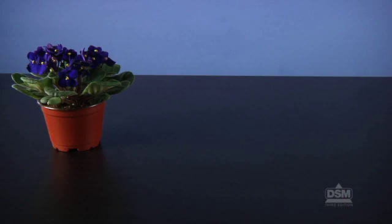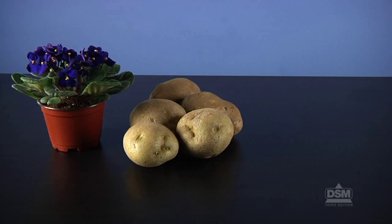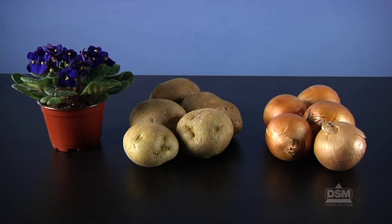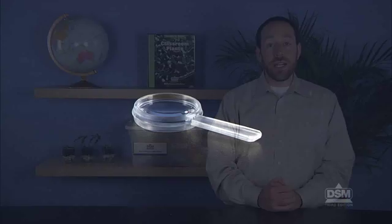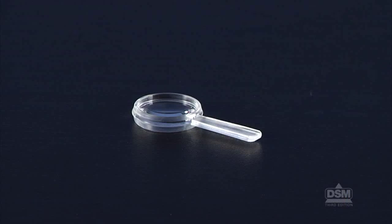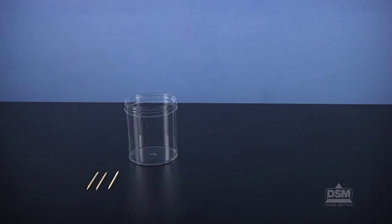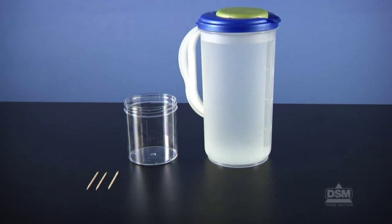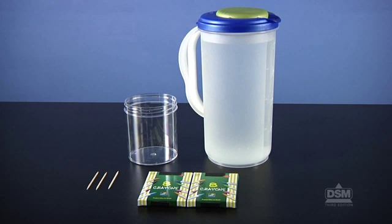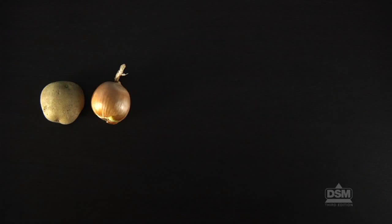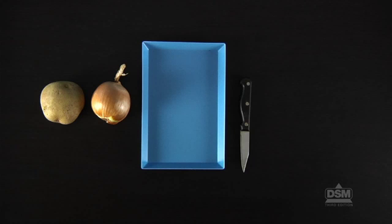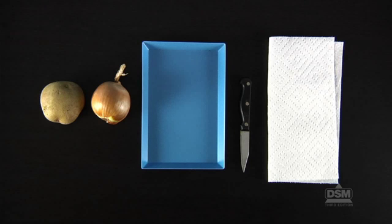Purchase one African violet plant, five medium-sized white potatoes with eyes, and five onions. Each student will need a magnifier. Each team of four will need three toothpicks, one jar, some tap water, two boxes of crayons, and a masking tape label for their jars. You will need one potato, one onion, a plastic tray, and a paring knife for a class demonstration. Have paper towels on hand for wiping up spills.